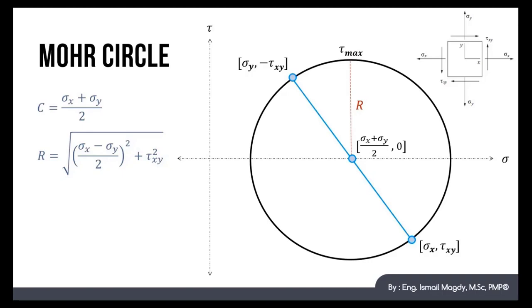We can also see now that the principal stresses, which are maximum and minimum normal stresses sigma a and sigma b, occur at zero shear stress. We can calculate the principal stresses from the graph using the following equations: sigma a equals c plus R, while sigma b equals c minus R.